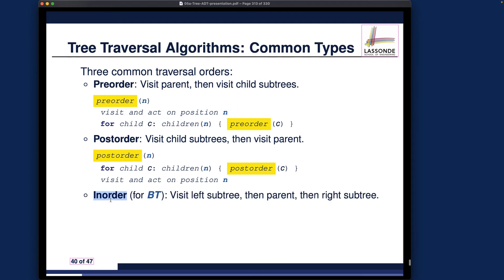Finally, there is something called in-order. I want to emphasize an important precondition: pre-order and post-order are general traversals applicable to any tree with an arbitrary number of children — that's why the pseudocode uses a full loop. In-order traversal, however, is not applied to general trees. It is only applied to binary trees, meaning every internal node has at most two child nodes.